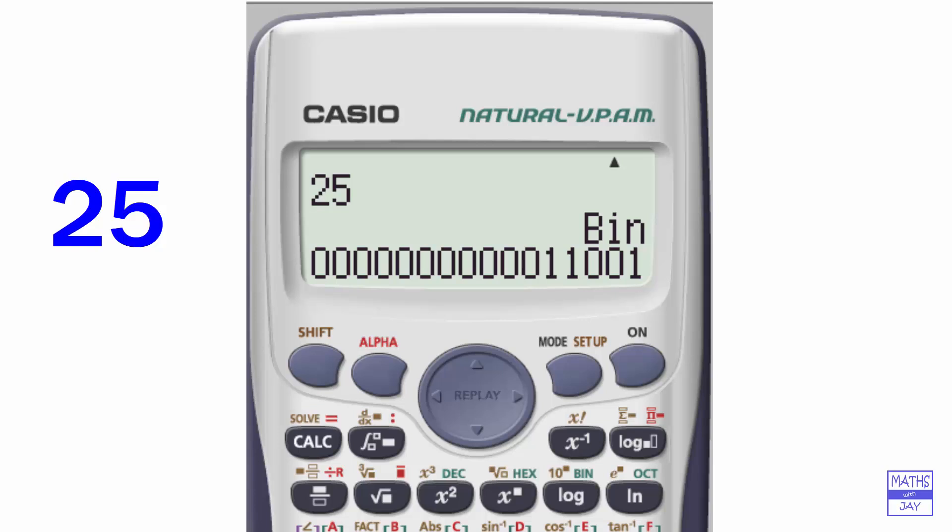So now let's convert to octal, so remember we're still looking at the number 25. And that's 31. Again, ignore the leading zeros. So that's 3 times 8 plus 1 is 25.